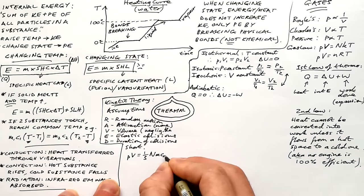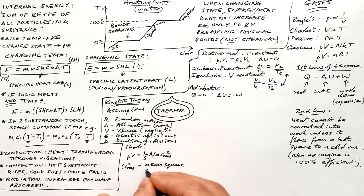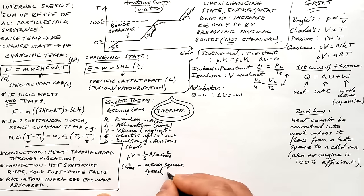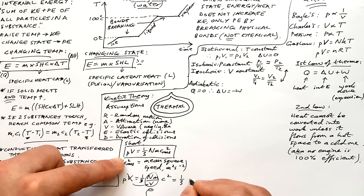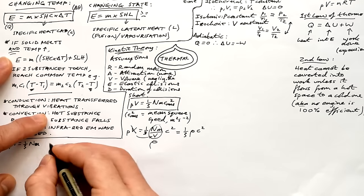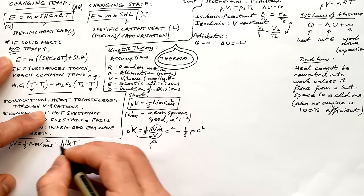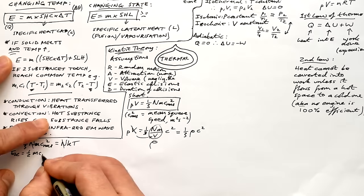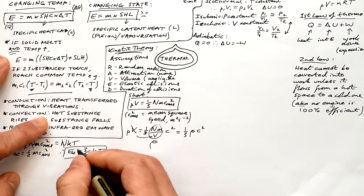The final equation: PV equals one-third NMC_rms squared. C_rms is root mean square speed, so C_rms squared is also called mean square speed — be careful not to confuse those two. Using density in the equation: dividing the whole thing by volume gives NM over V, which is total mass over volume — that's density. So P equals one-third rho C squared. We can also prove EK equals three-halves kT by equating one-third MC squared equals kT with half MC squared for kinetic energy.